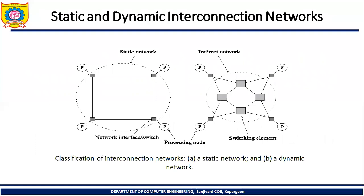A figure can clarify static and dynamic interconnection networks. Figure A shows the static network where direct point-to-point connections are given — processors P are connected directly with other processors, making it a direct or static network. In the dynamic network, routers and communication links are shown. Processors communicate with each other via these routers and links rather than directly. Since P is not directly connected to another P but communicates via routers, it is an indirect or dynamic network.